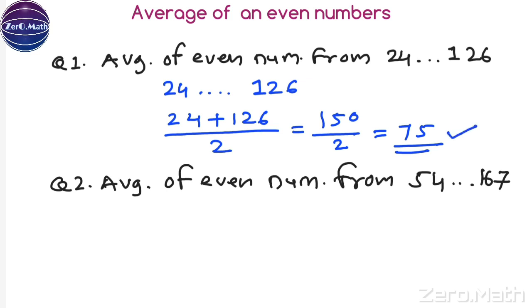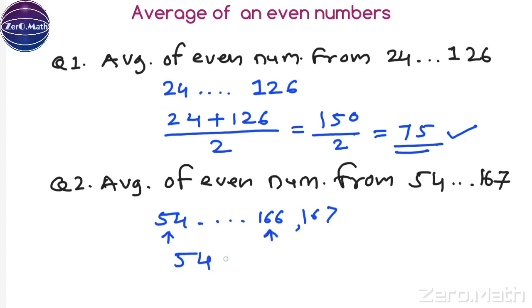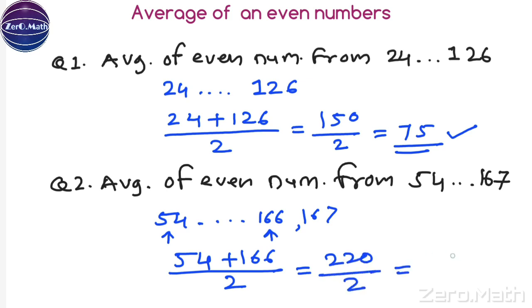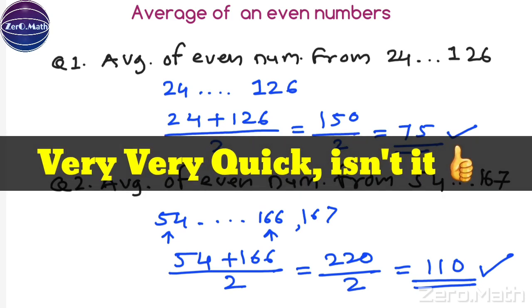Find the average of even numbers from 54 to 167. The first even number is 54. Is 167 even? No. The even number before 167 is 166. So first even number is 54, last is 166. Apply: (54 + 166) / 2 = 220 / 2 = 110. That is the average of the even number series from 54 to 167.